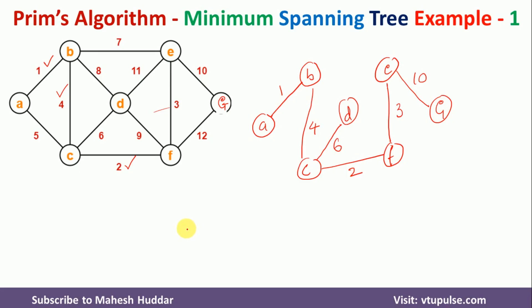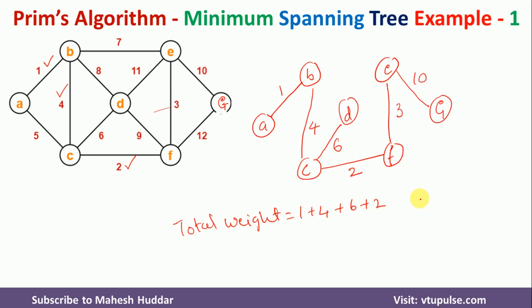We will now find the total weight of this minimum spanning tree by adding all the weights. So the total weight is 1 + 4 + 6 + 2 + 3 + 10, which gives us 11, then 13, then 16, and then 26. So 26 units is the total weight of this particular minimum spanning tree.